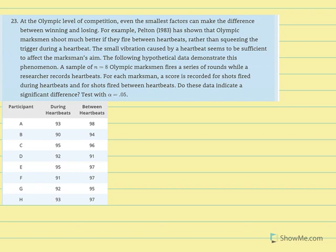For example, Pelton has shown that Olympic marksmen shoot much better if they fire between heartbeats rather than squeezing the trigger during a heartbeat. The small vibration caused by heartbeats seems to be sufficient to affect the marksman's aim. The following hypothetical data demonstrates this phenomenon.